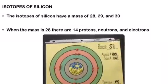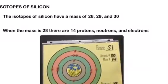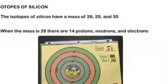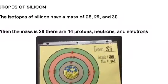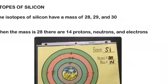Isotopes of silicon. The isotopes of silicon have a mass of 28, 29, and 30. When the mass is 28, there are 14 protons, neutrons, and electrons.